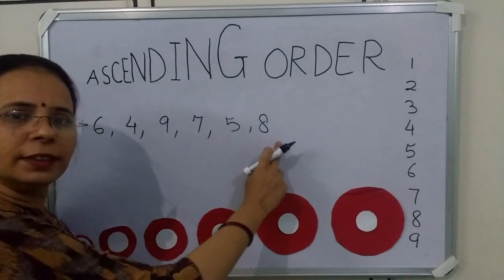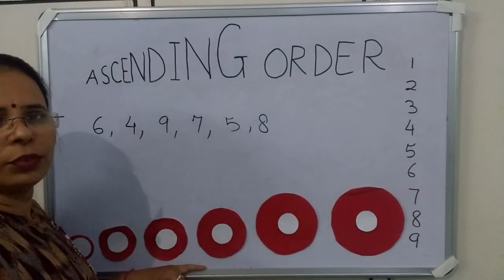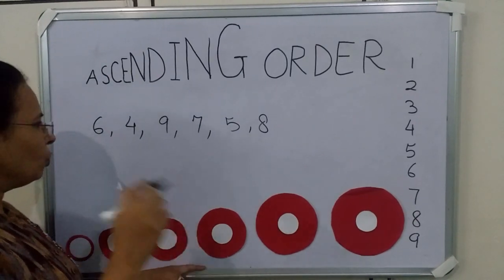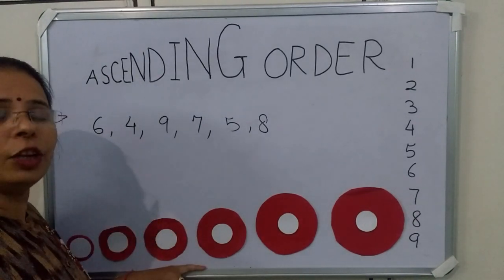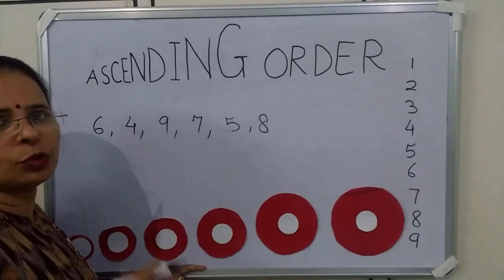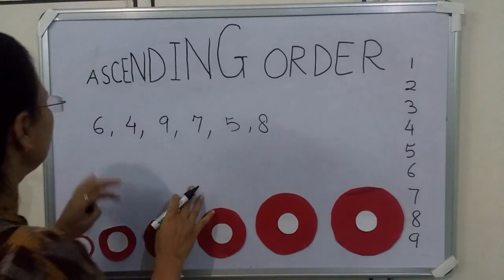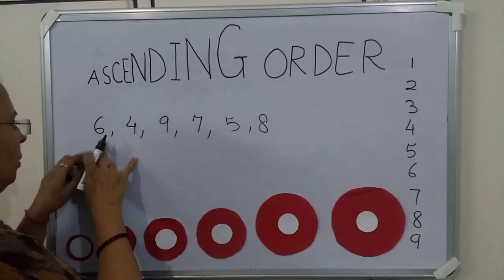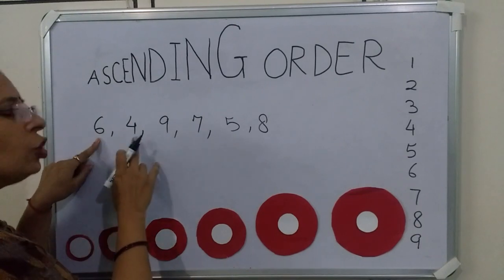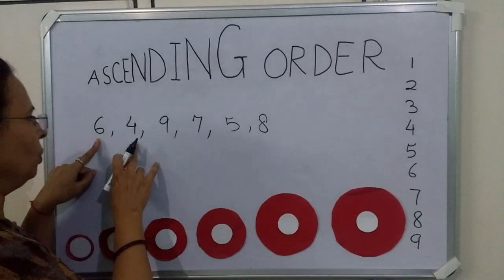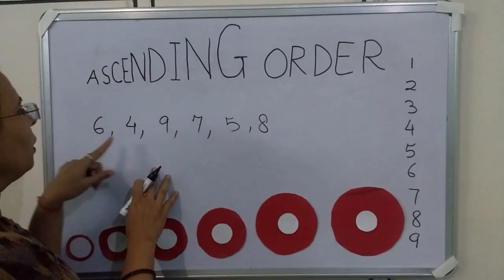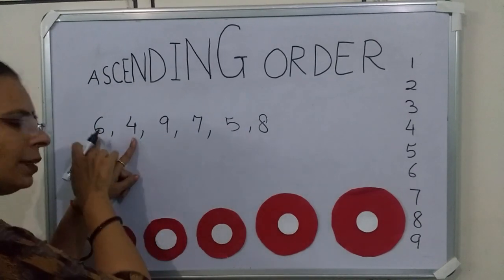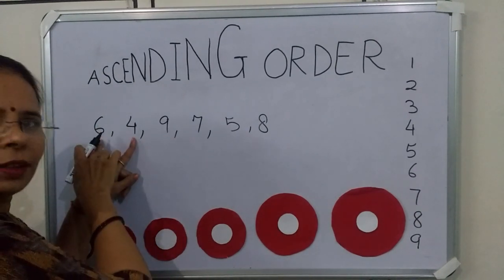Now we will arrange this set of numbers in ascending order. First we have to find which is the smallest number. You can see the first number written is 6. Is 6 smaller than 4? No, so we will skip. Now we will see 4. Is 4 smaller than 6? Yes.